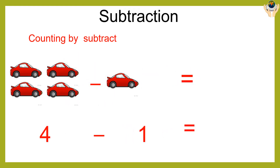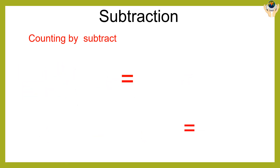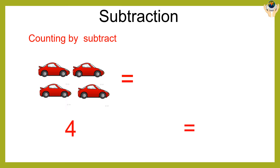Similarly, we have to subtract the cars. Four cars minus one car is equal to what? Take away one car from the four cars. How many cars are left? One, two, three. The answer is three.